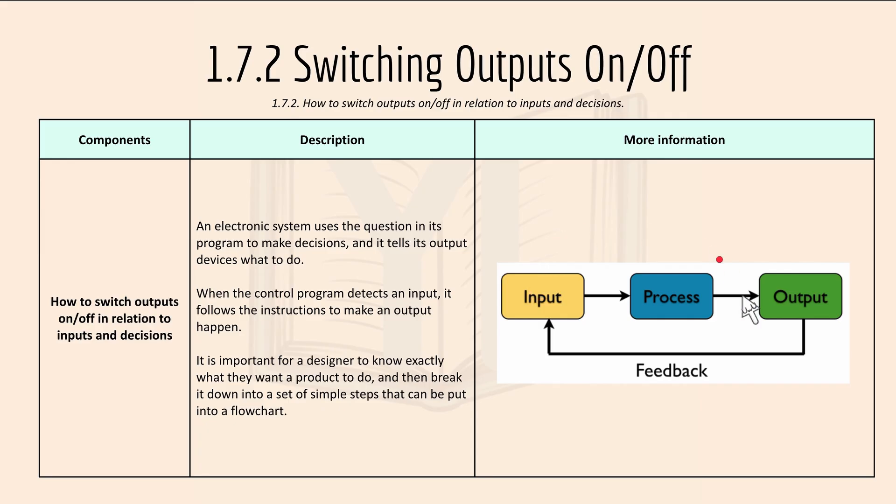So here's a simple feedback loop: input, process, output and feedback. And this looks like continuous for that program.